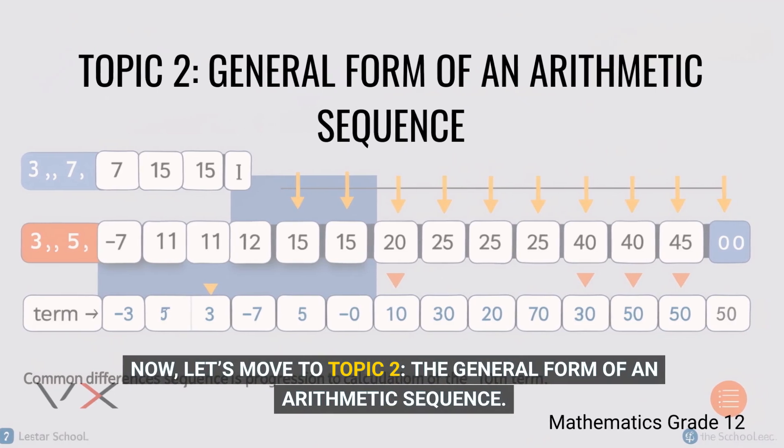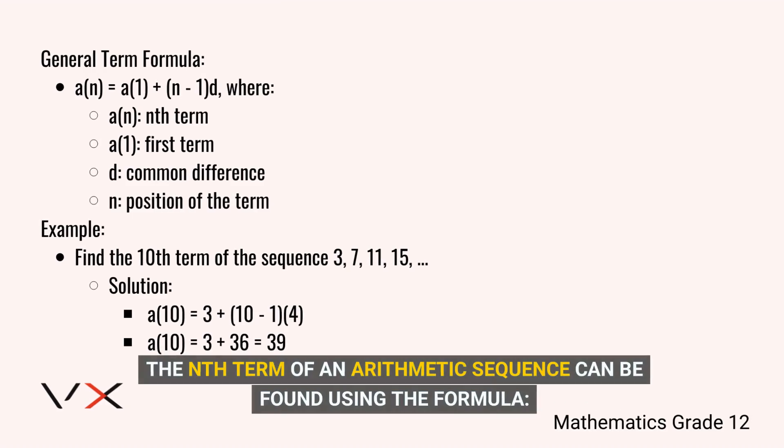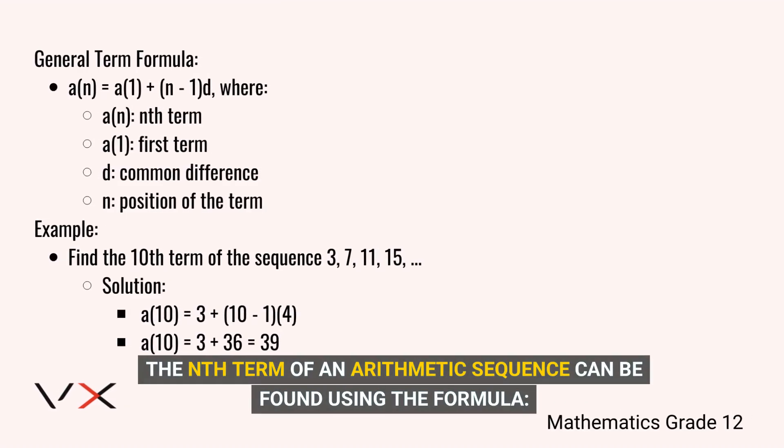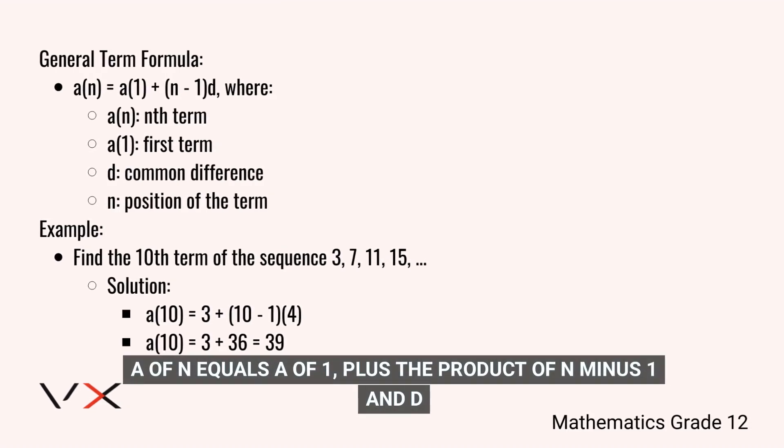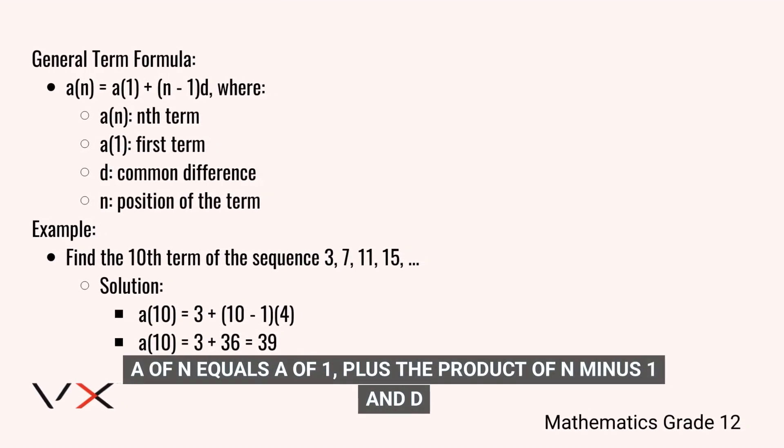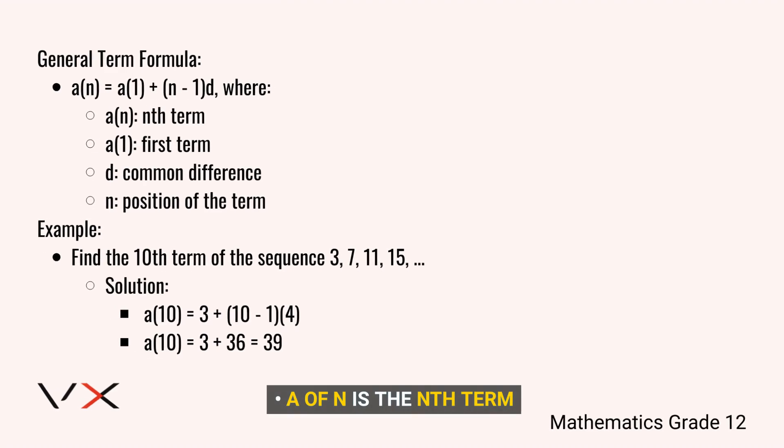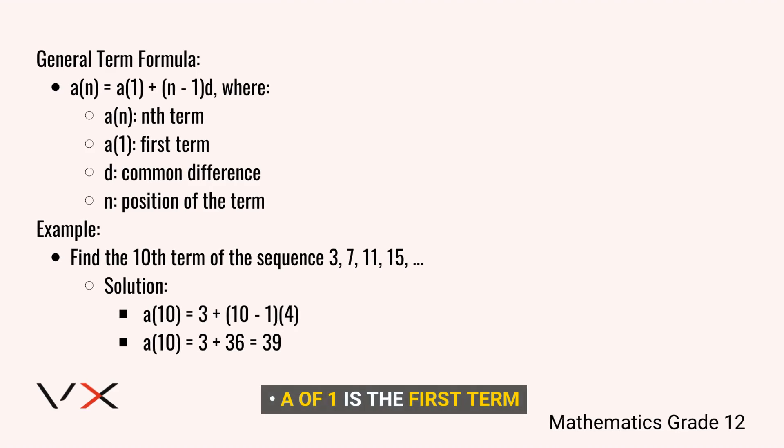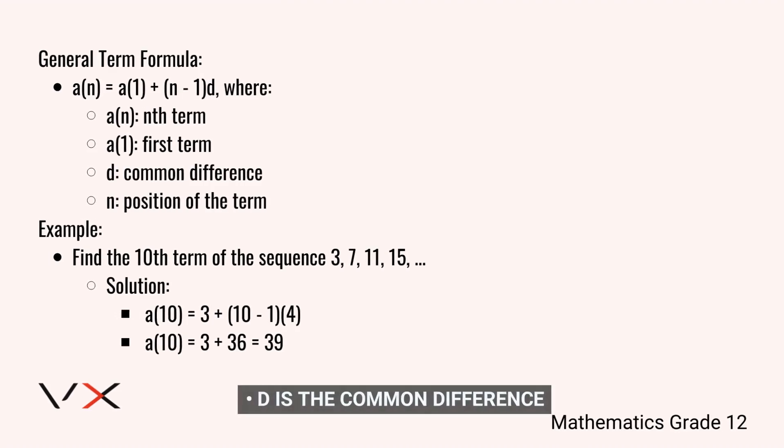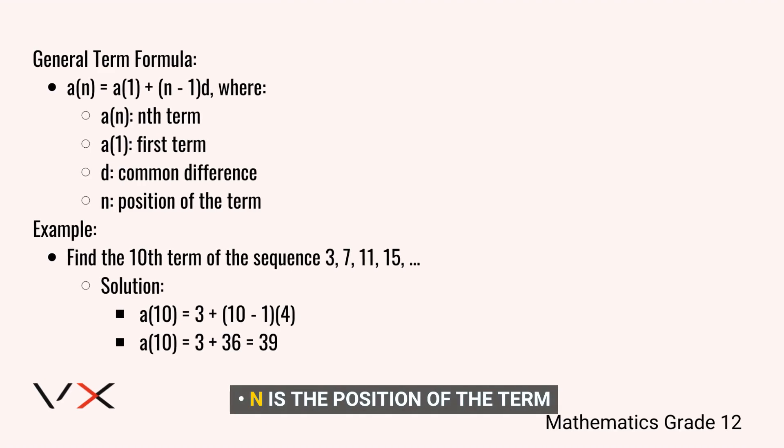Now, let's move to Topic 2, the general form of an arithmetic sequence. The nth term of an arithmetic sequence can be found using the formula a(n) = a(1) + (n-1)d, where a(n) is the nth term, a(1) is the first term, d is the common difference, and n is the position of the term.